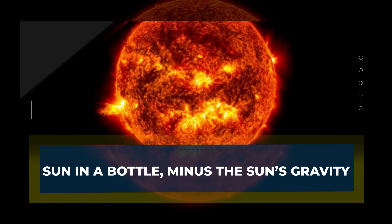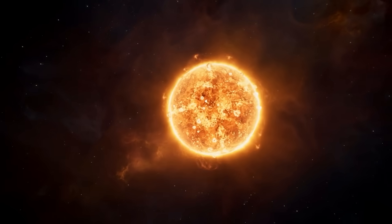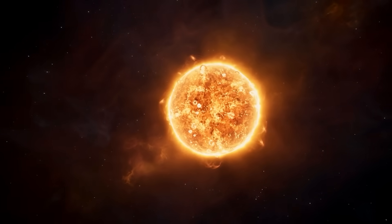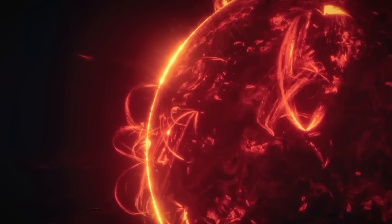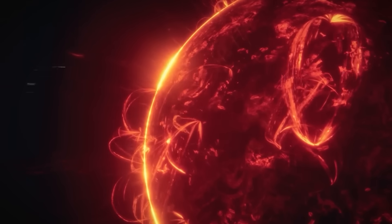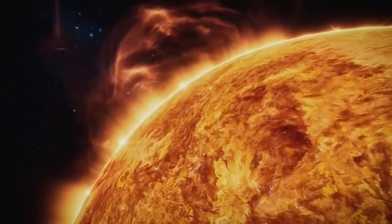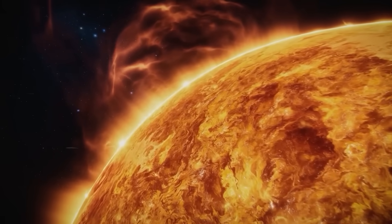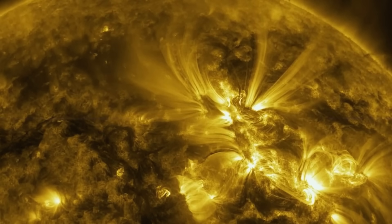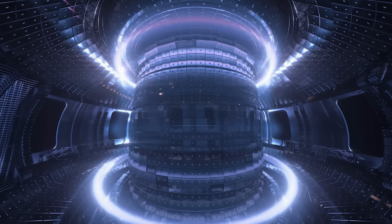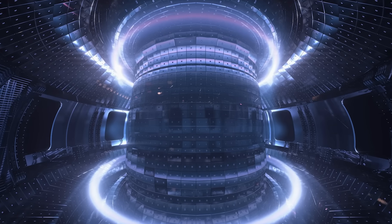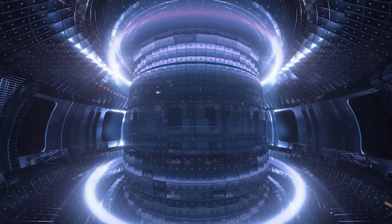Sun in a bottle minus the Sun's gravity. The Sun does not burn like fire. It fuses. In its core, pressure and gravity squeeze hydrogen so tightly that nuclei slam together and become helium. A small bit of mass turns into energy. That is why one kilogram of fusion fuel can hold the energy of millions of kilograms of fossil fuel.